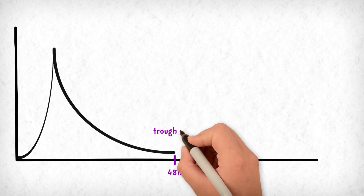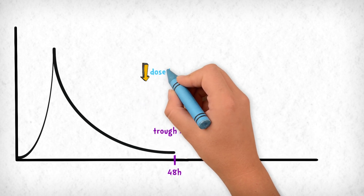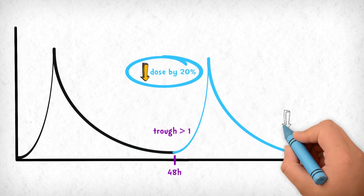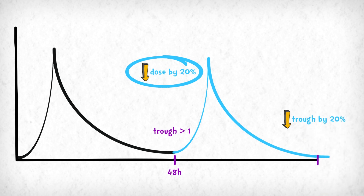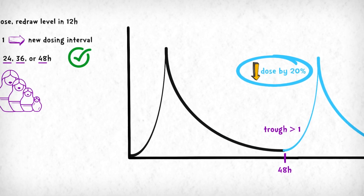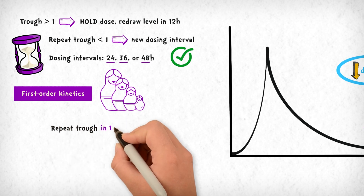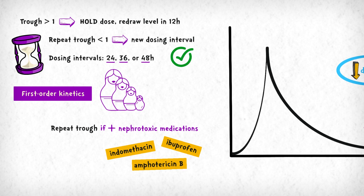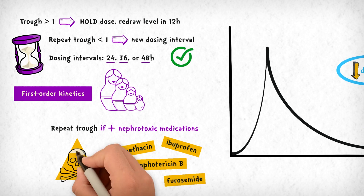If the trough is greater than 1 at 48 hours, decrease the dose by 20% and redraw a trough in another 48 hours. A 20% change in dose will theoretically produce a 20% change in the trough, but variability in pharmacokinetics and pharmacodynamics prevents total reliability. Trough monitoring should continue until confirmed less than 1. Continue gentamicin at this dose and interval, and repeat the trough in one week — or sooner if there are signs of acute kidney injury or addition of another nephrotoxic medication such as indomethacin, ibuprofen, or amphotericin B, as these will decrease gentamicin's elimination and increase risk of toxicity.